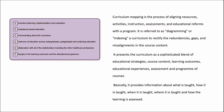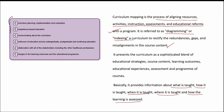Curriculum mapping is a process of aligning resources, activities, instructions, assessments and educational reforms within a program. It is referred to as diagramming or indexing a curriculum to rectify redundancies, gaps and misalignments in course content. It presents the curriculum as a blend of educational strategies, course content, learning outcomes, educational experiences, assessment and program of courses — providing information about what is taught, how it is taught, when, where, and how learning is assessed. C in curriculum mapping stands for: curriculum planning, curriculum implementation and curriculum evaluation; competency-based education; communicating about the curriculum; continuum of education across undergraduate, postgraduate and continuing education; collaboration with all stakeholders including other healthcare professions; and changes in learning outcomes and the educational program.